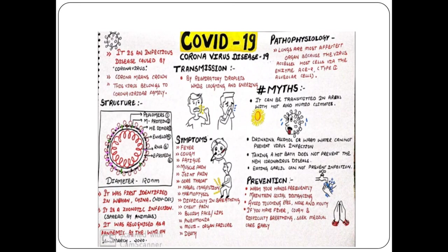Pathophysiology: the lungs are the most affected organs because the virus accesses the host cell via the enzyme ACE2. It may also infect the kidneys.